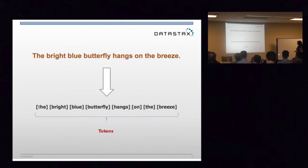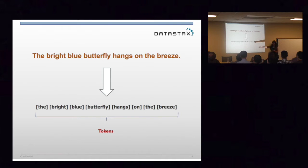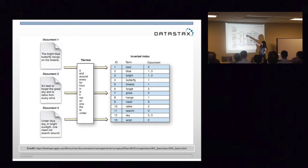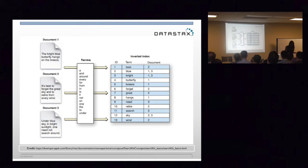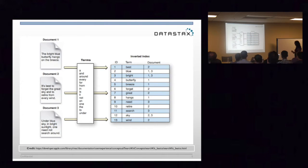Specifically, how Lucene indexes work: it takes a document — for example, 'right view butterfly, hands on the breeze' — and that gets tokenized into individual words. Those individual terms are then given IDs and listed with which documents contain them. This is called an inverted index. What is wonderful about these inverted indexes is they are super fast and super efficient. You can find stuff incredibly quickly. But Solr is not a distributed architecture. It doesn't live in the cloud, it doesn't have all the wonderful buzzwords you've come to expect from systems nowadays.